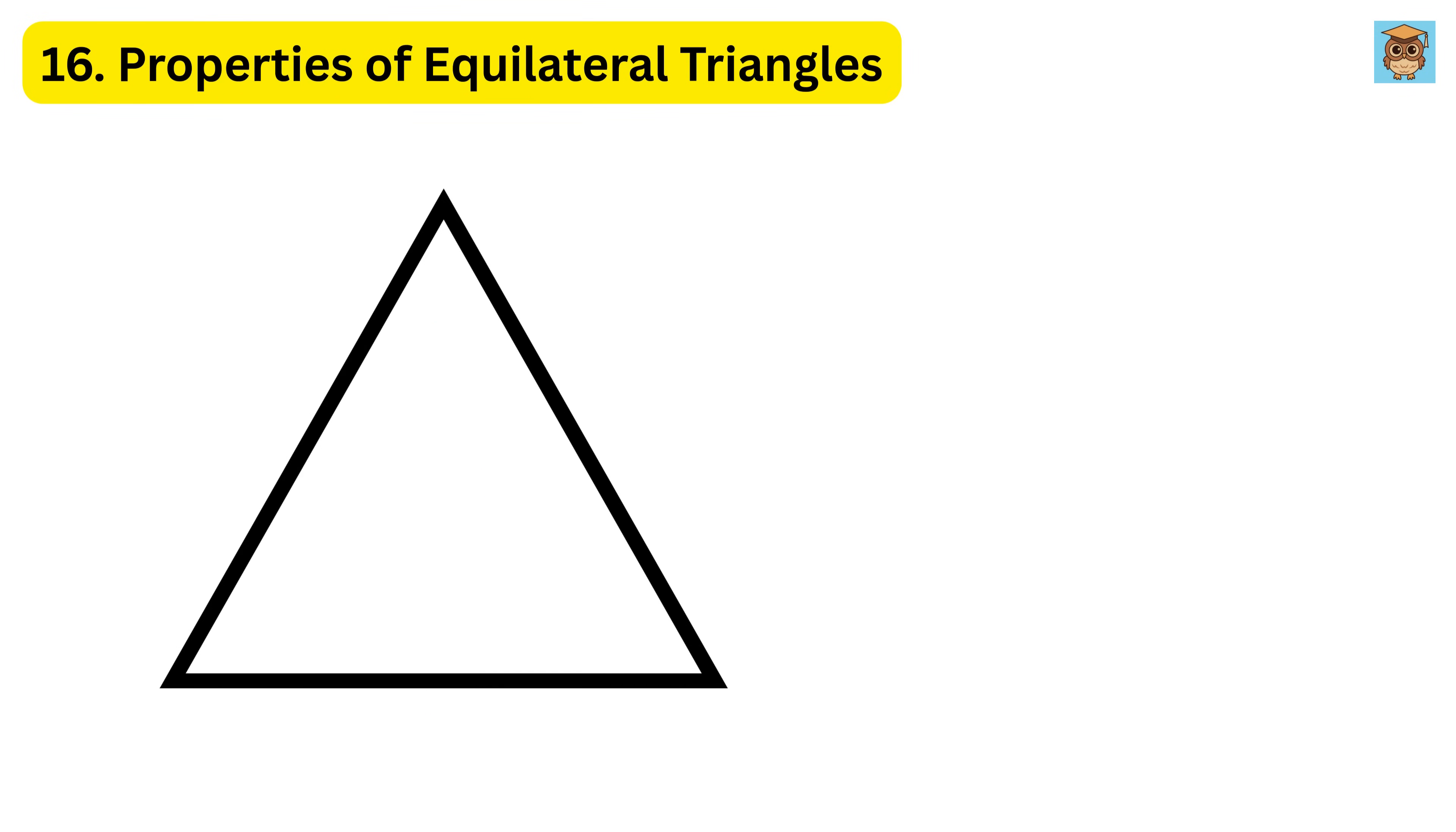16. Properties of equilateral triangles. An equilateral triangle is super special because all three sides are exactly the same length, and all three angles are always 60 degrees. One amazing fact about an equilateral triangle is that the height, median, and angle bisector from any corner are actually the same line.